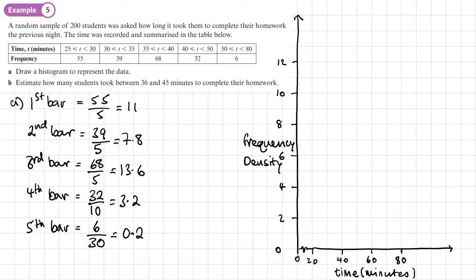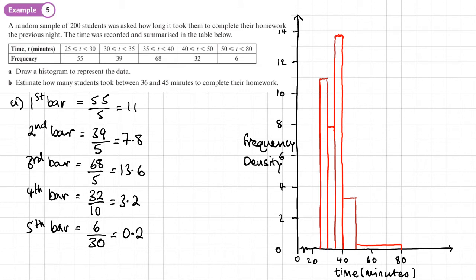So now I'm going to draw in the bars. OK, so there's my complete histogram. I realized actually I needed to go up to 13.6. I just added a little bit more at the top here to get that bar in. OK, now I'm going to part B.